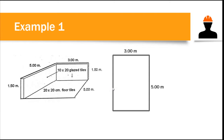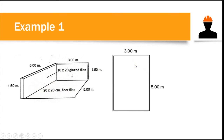Let me give you an example. Let's say this is your room — the dimension is three by five meters, a rectangular room. You want to place tiles on the wall and on the floor. You want to place 10 by 20 centimeter glazed tiles on the four sides of your room, and then a 20 by 20 centimeter floor tile on your floor. We will compute how many of each tile type you will need.